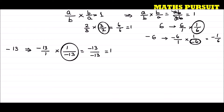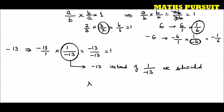We should not have a negative sign in the denominator. So the multiplicative inverse of minus 13, instead of saying 1 upon minus 13, we should say it is minus 1 upon 13. This is our answer. We should always say it is minus 1 upon 13, not 1 upon minus 13.